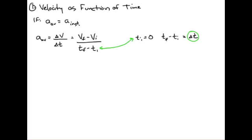Let's rewrite this. Average acceleration equals v final minus v initial over the change in time, however much time has elapsed.